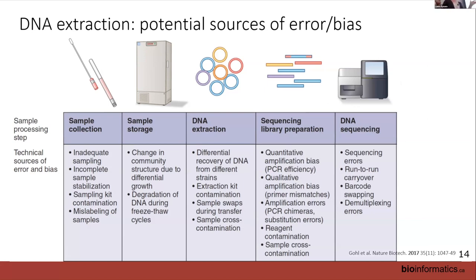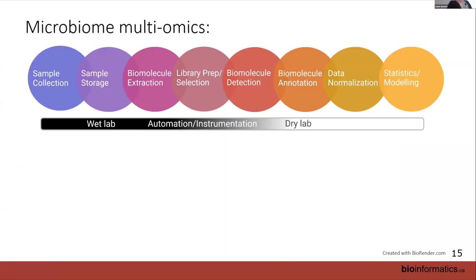For sequencing libraries, there is some evidence — and we're seeing this ourselves — that library prep, particularly for shotgun, can introduce bias. There's a long-standing notion of GC bias in library preparation that varies by kit based on how DNA is sheared and amplified. Whether it's specifically GC bias or other aspects of library prep contributing to microbiome variability is still unclear, but it's starting to emerge as something to keep an eye on.